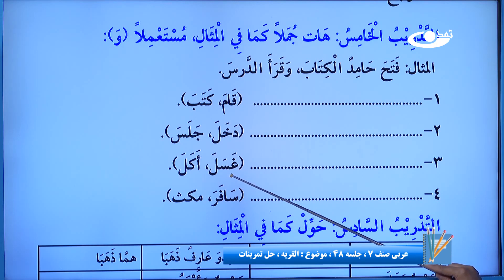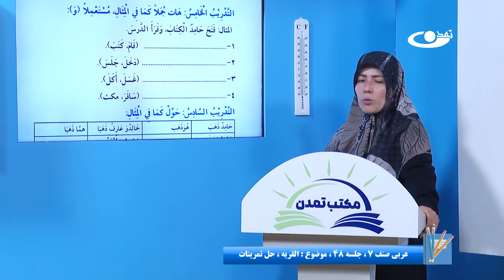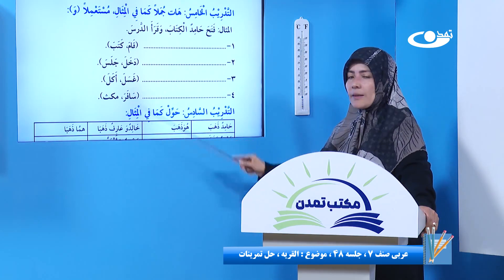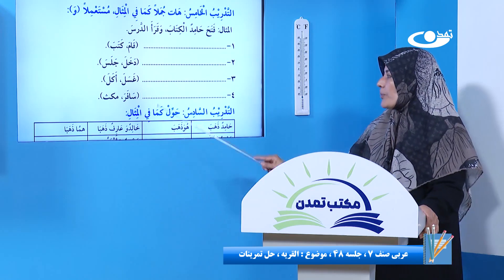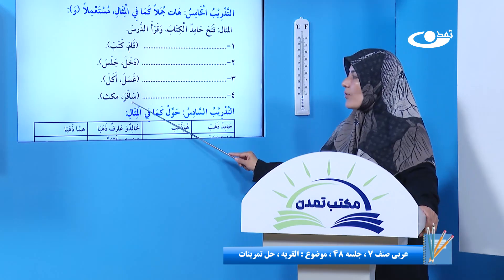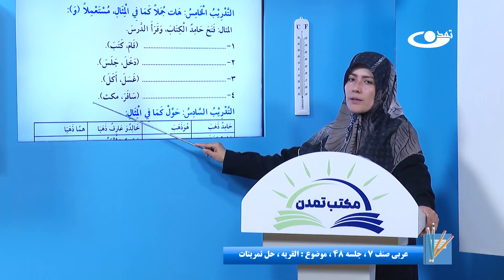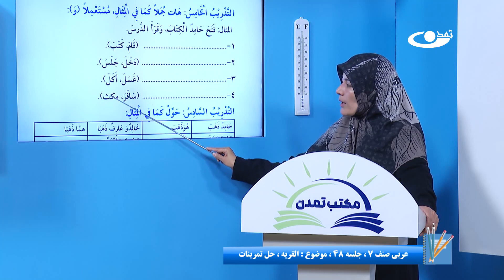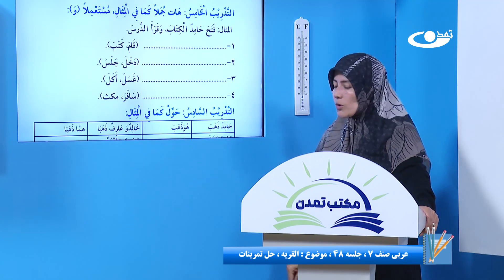غسلَ علیٌ یدیهِ - دستانش را شست علی - وأکلَ الطعامَ. این نکته خیلی مستحب هست که قبل از خوردن طعام دستهای خود را بشویید. سافرَ علیٌ إلى القریةِ ومکثَ أیامَهُ - مسافرت کرد علی به سوی قریه و ماند آنجا چند روزی.